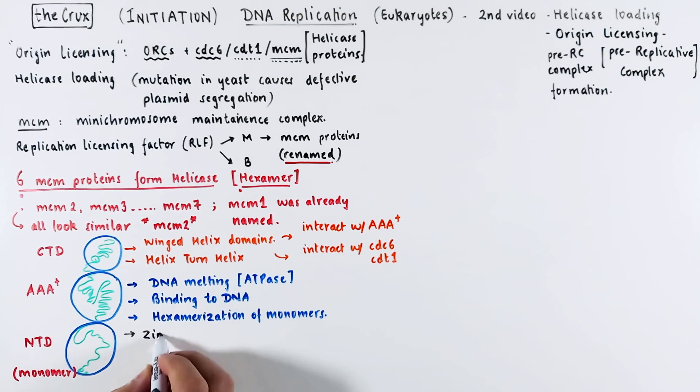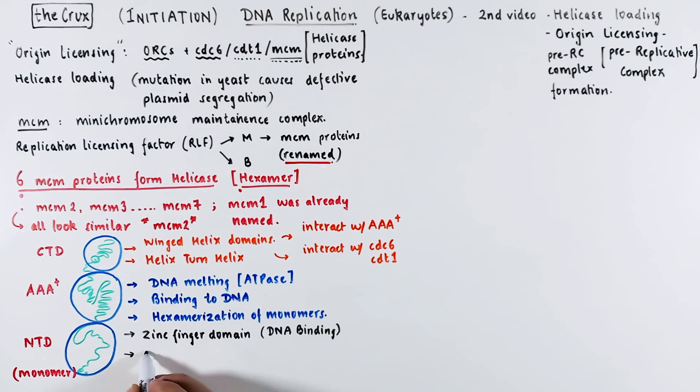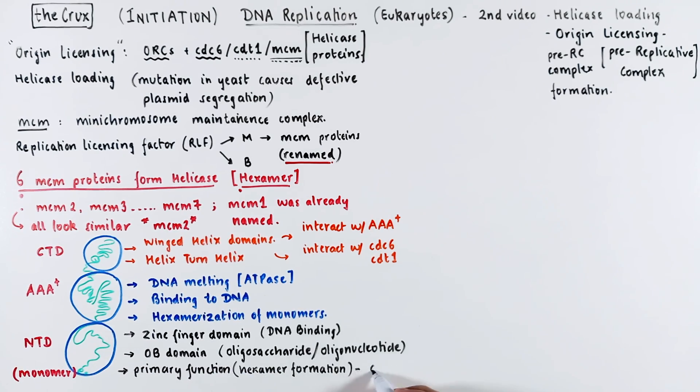The N-terminal domain has zinc finger domains, which are key to bind the DNA. It also has OB domain, which binds both oligosaccharides and oligonucleotides. It is, however, primarily involved in hexamer formation. On top of it, it also mediates double hexamer formation.